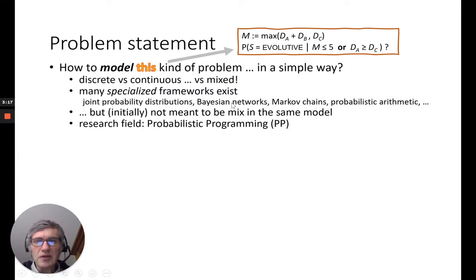Okay, problem statement. There are two questions, I think, here. How to model this kind of problem in a simple way? As maybe you know, if you work on the probabilistic programming research field, there are many existing ways to do that. There are discrete random variables or continuous or even mixed models where both kinds of variables occur. There are also many specialized frameworks, like Bayesian networks, Markov chains, adding together two variables. It's called probabilistic arithmetic. But initially, all these frameworks or algorithms are not meant to be mixed together.